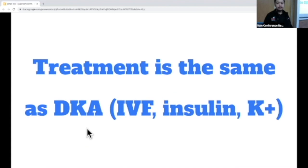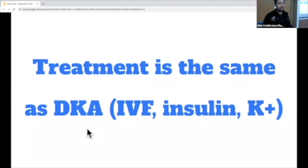The last thing to know is that the treatment is still going to be the same. So no matter if it's euglycemic or hyperglycemic DKA, we're still going to treat with fluids, IV insulin, and potassium repletion as needed. The goal is to close the gap and eventually transition to oral agents. Overall, just keep in mind that this is something that could be missed — but if we have it in our mind and in our differential, hopefully we'll always think about it when we see a patient like this.